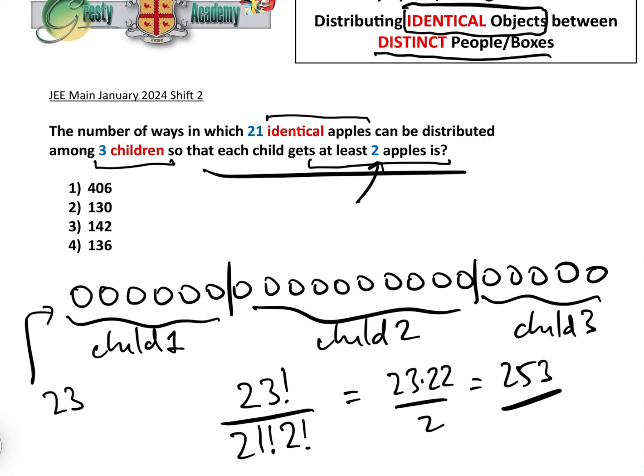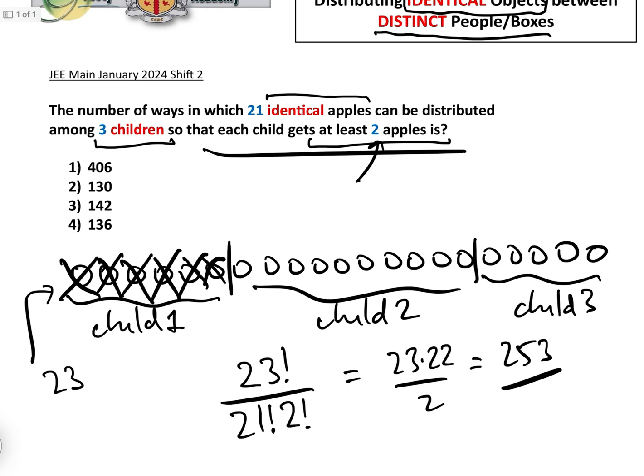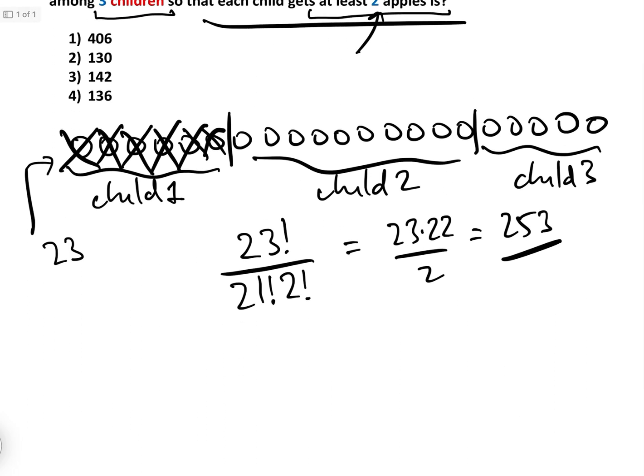Okay, well we have got that constraint, but that's actually not a big problem because if each child has to get at least two apples, well let's give child 1 those two apples, and let's give child 2 those two apples, and let's give child 3 those two apples because they're identical apples. And that would leave us with 15 apples.